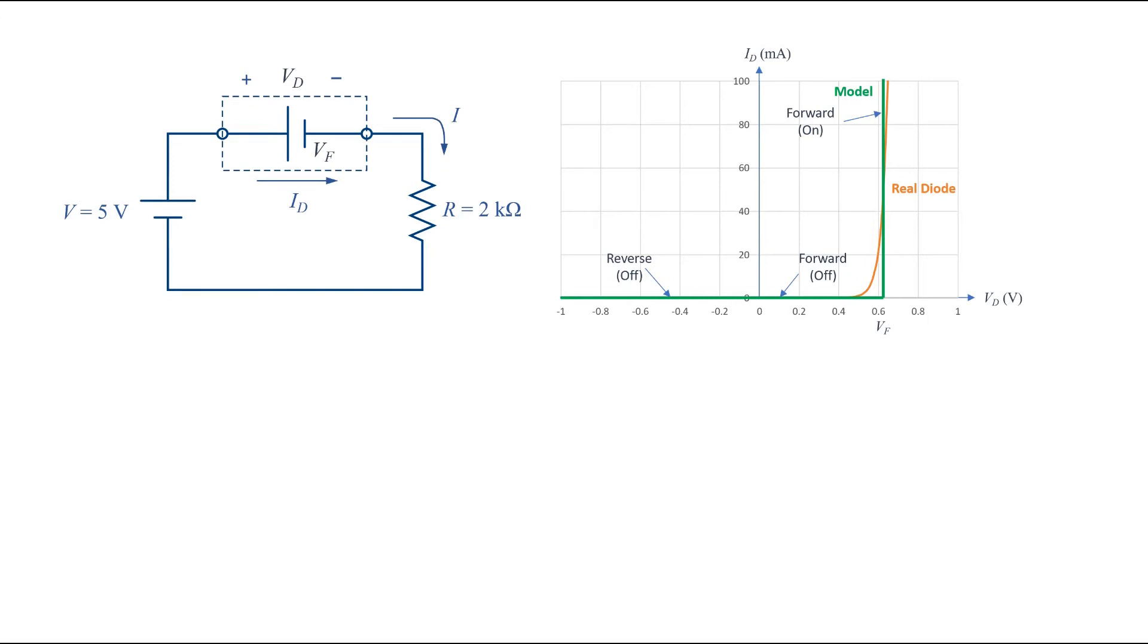We can write Vd, which is equal to Vf, and we assume that it's 0.6 volts. It doesn't matter if we say 0.7.